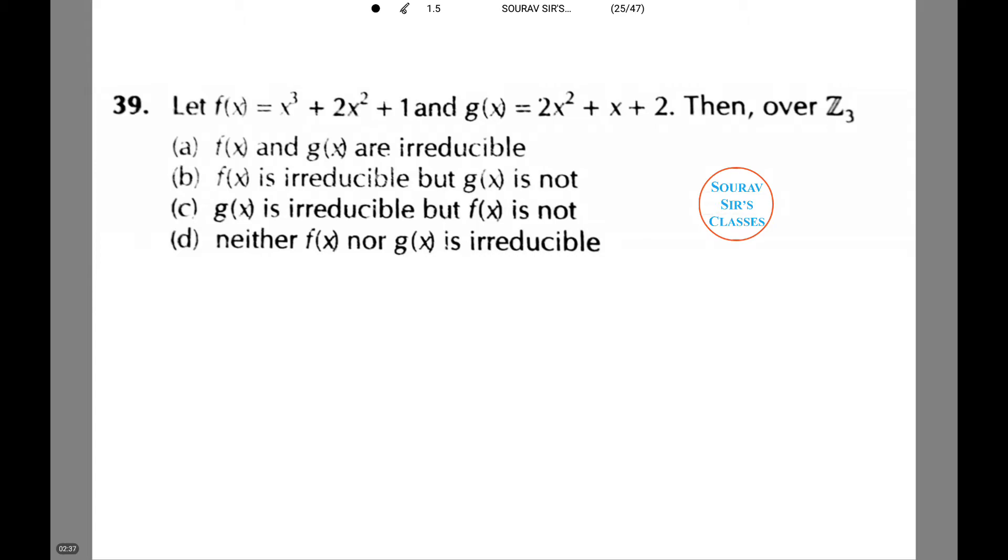In the next question, we have f(x) equals x cubed plus 2x squared plus 1, and g(x) equals 2x squared plus x plus 2. Then, over Z_3, we have to identify which of the following is correct. Therefore, Z_3 equals 0, 1, 2.